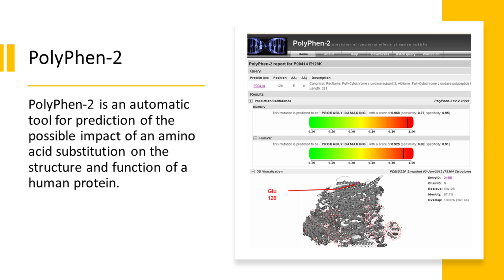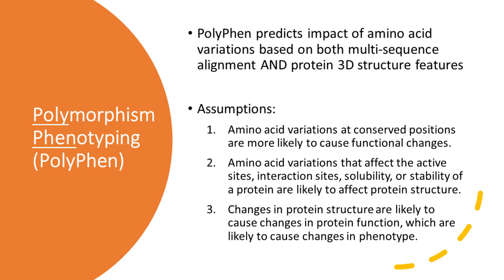PolyPhen predicts functional effects of amino acid variations based on both multi-sequence alignment and protein 3D structure features. It is based on three presumptions. The first is the same as in SIFT: that amino acid variations at conserved positions are more likely to cause functional changes.